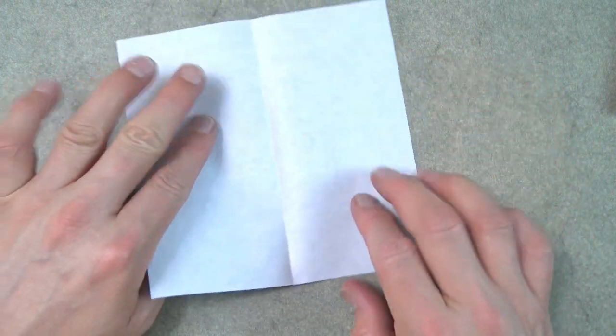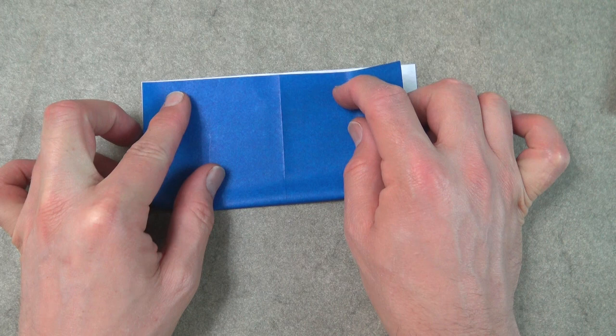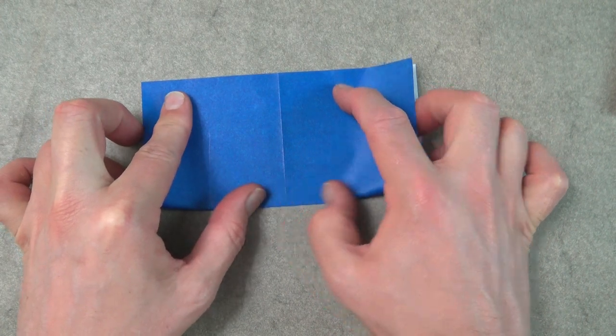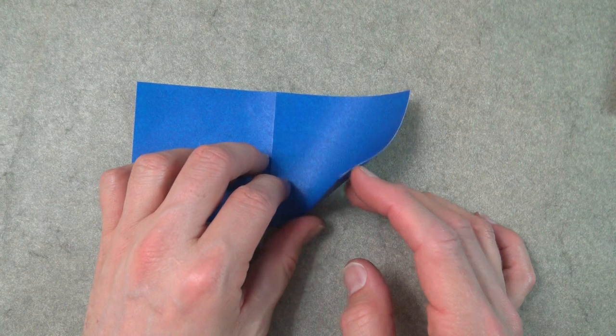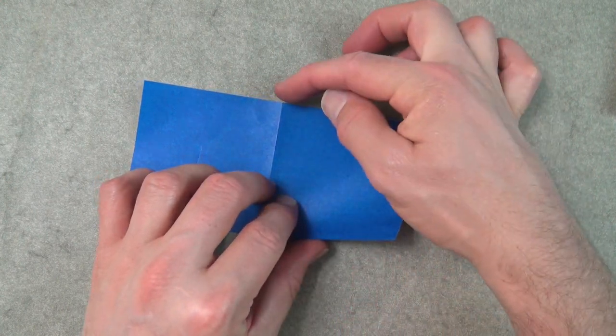Unfold, rotate, and fold in half in this direction. We're making a square base. Fold this corner to this point.